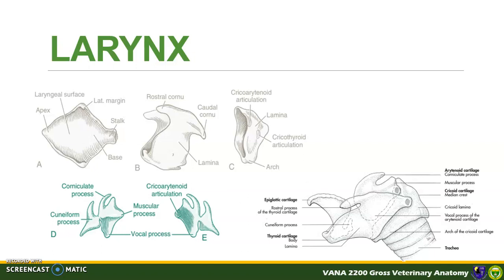The vocal process is a ventral projection for the attachment of the vocal cords. The muscular process is a lateral process for the insertion of the intrinsic laryngeal muscle called the cricoarytenoideus. The corniculate process is the dorsal horn-like process forming the dorsal opening of the larynx, while the cuneiform process is the most rostral among the four.